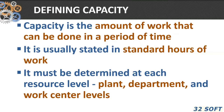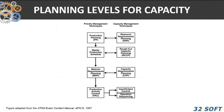So what is capacity? Capacity is the amount of work that can be done in a period of time. It's usually stated in standard hours and you can do capacity planning at several levels within the closed loop system. If you look at the closed loop system — this comes back from our MRP webinar back in June — you can see on the left we've got the production planning, master scheduling, material requirements planning, and production activity levels of the ERP closed loop system.